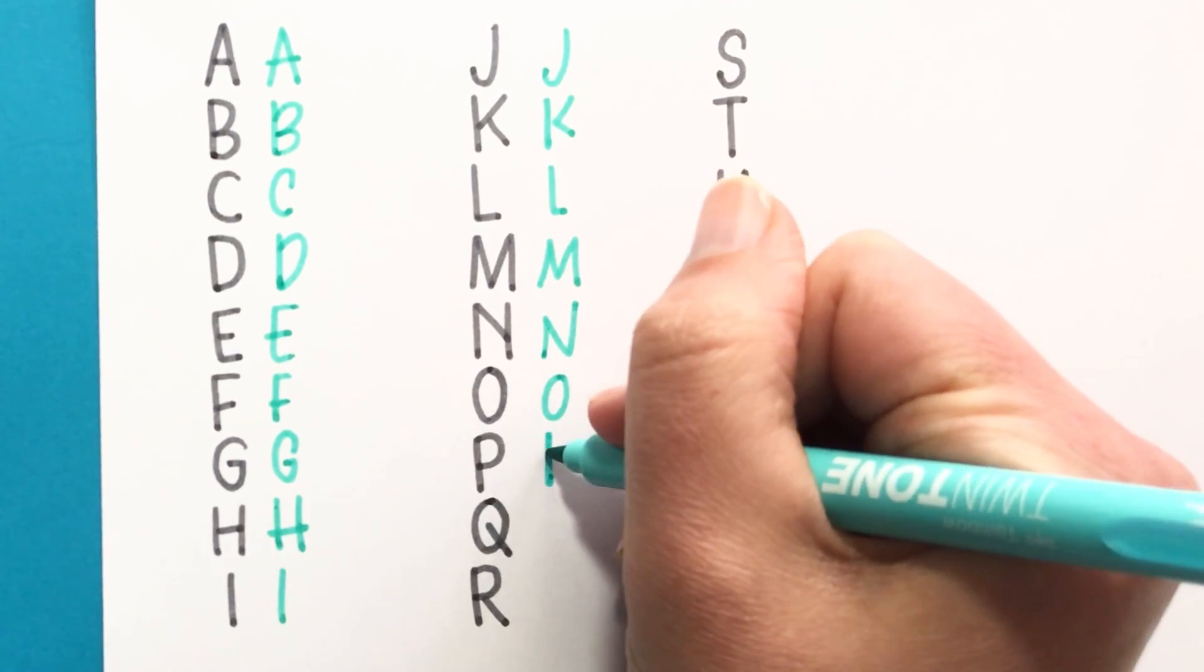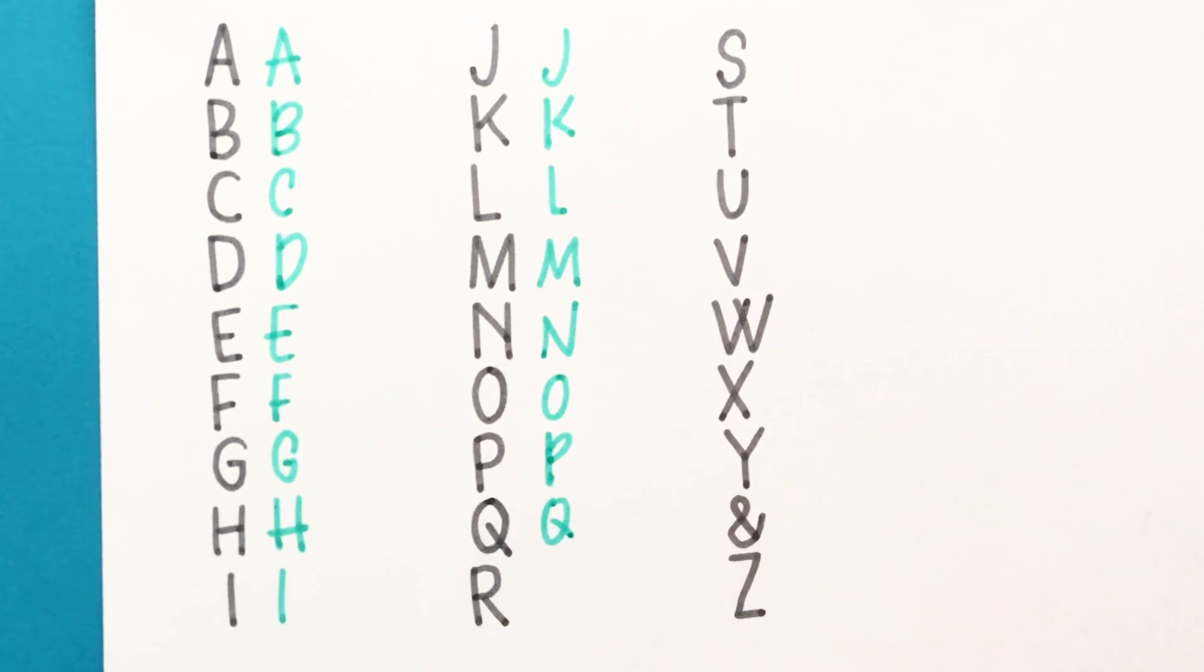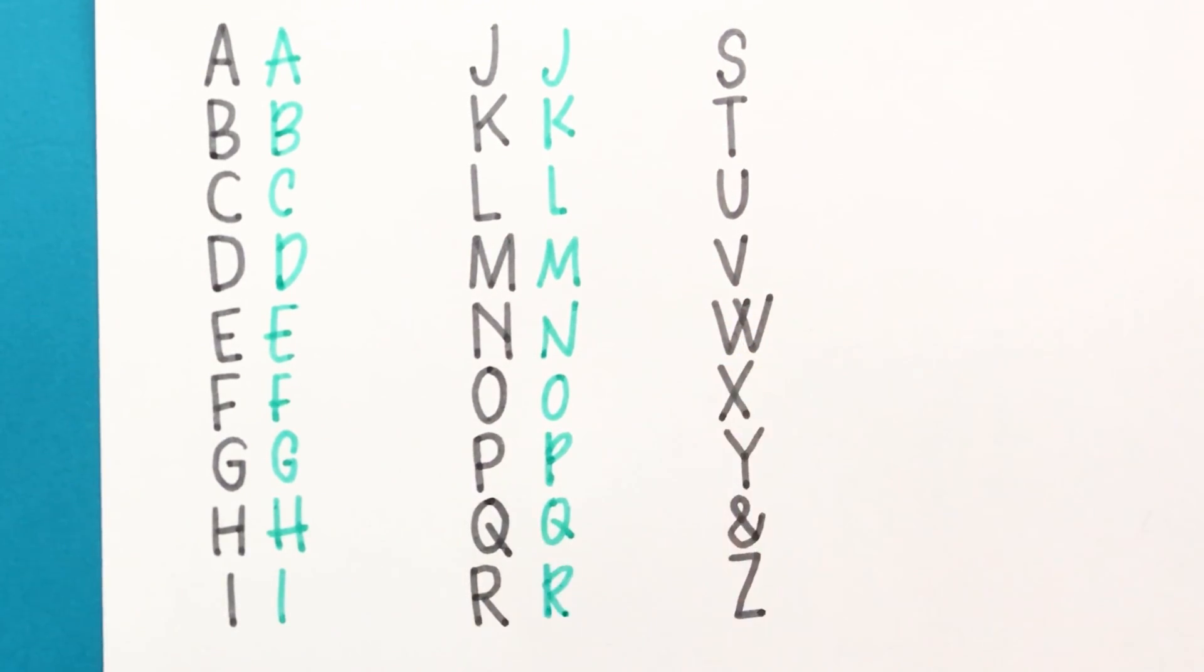P is similar to the B and the D. Q sometimes I just instead of making this crossbar come all the way down to the baseline like this, like for the K, you make it a little bit higher up and actually similar with the R.